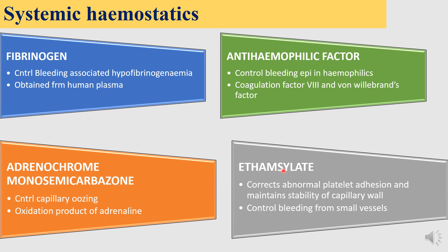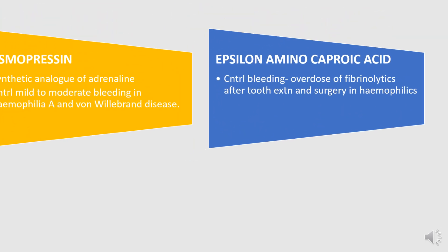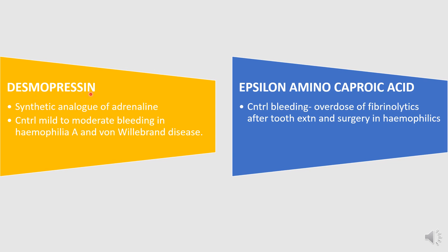Ethamsylate corrects abnormal platelet adhesion and maintains the stability of capillary walls, thereby controlling bleeding from small vessels. Desmopressin is a synthetic analog of ADH and can control mild to moderate bleeding in hemophilia A and von Willebrand's disease. Epsilon aminocaproic acid controls bleeding in cases of fibrinolytic overdose, after tooth extraction, or surgery in hemophilics.